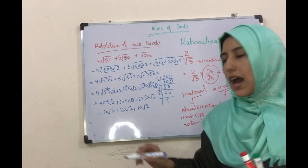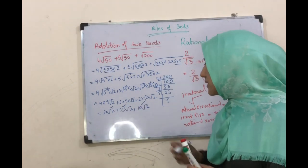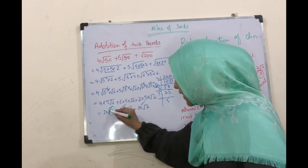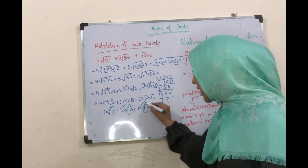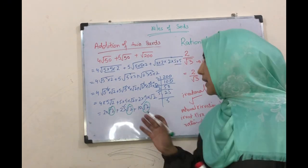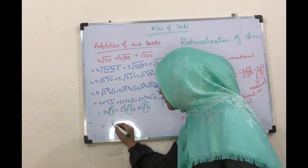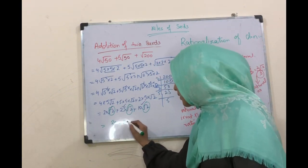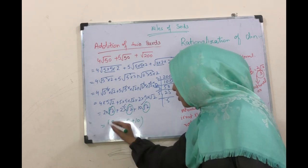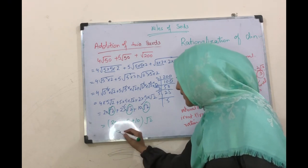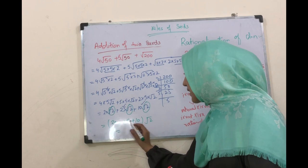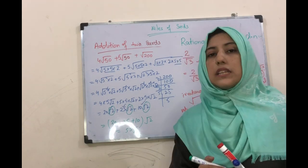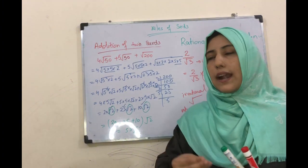یہاں چیک کیجئے کہ آپ کے پاس surds similar ہو گئے - √2۔ تو آپ اس کو add کر سکتے ہیں: 20 + 25 + 10 = ... 2 common لیں: 25 + 10 = 35، تو جواب 35√2 آجائے گا۔ This is how to add surds.